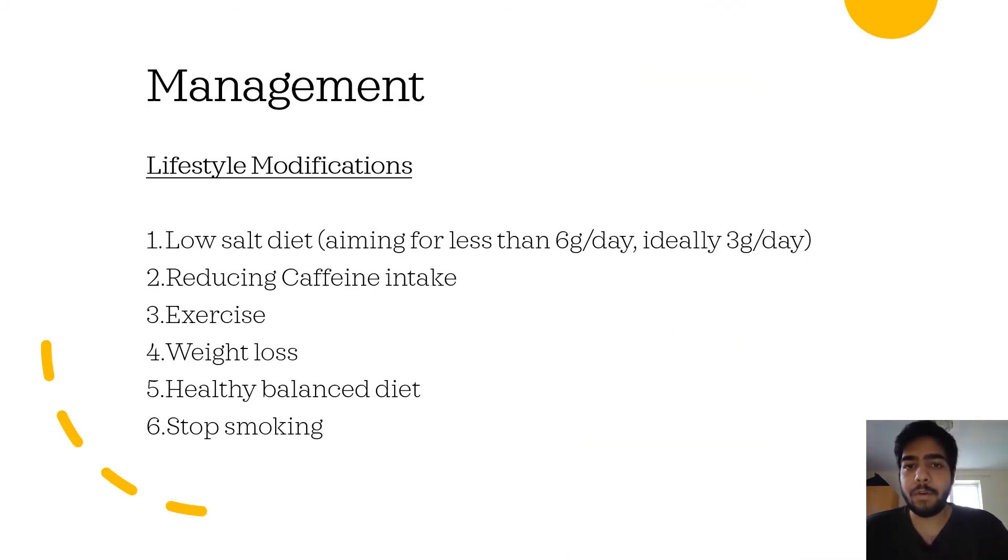When we talk about management, this is one of the most tested topics in PLAB 1. First of the management advices is lifestyle modification, which includes low salt diet (ideally less than three grams per day), reducing caffeine intake, exercise, weight loss, healthy balanced diet, and to stop smoking.